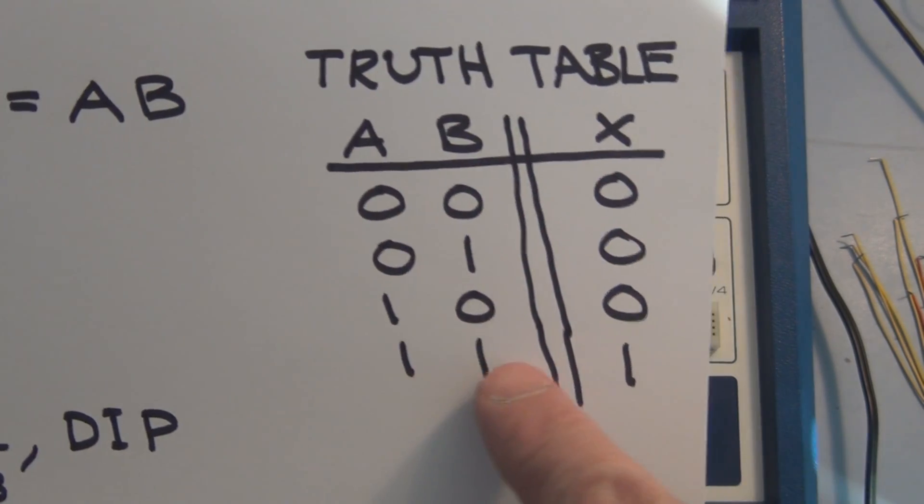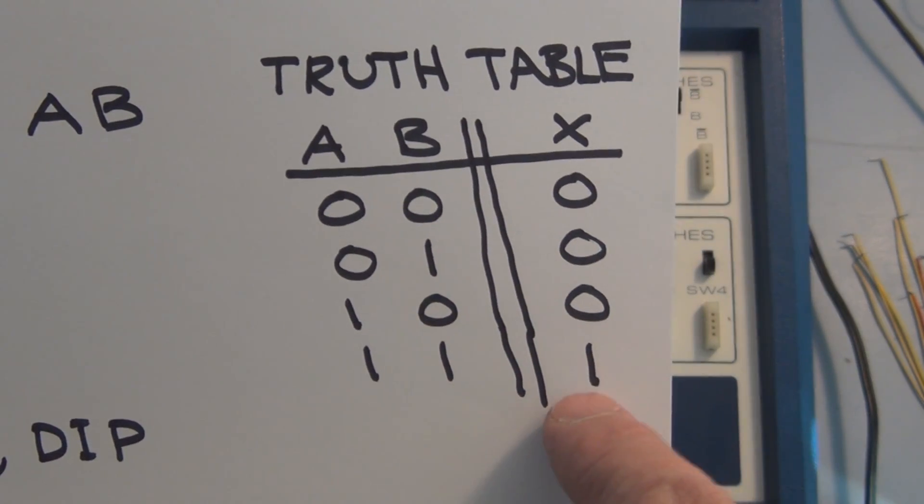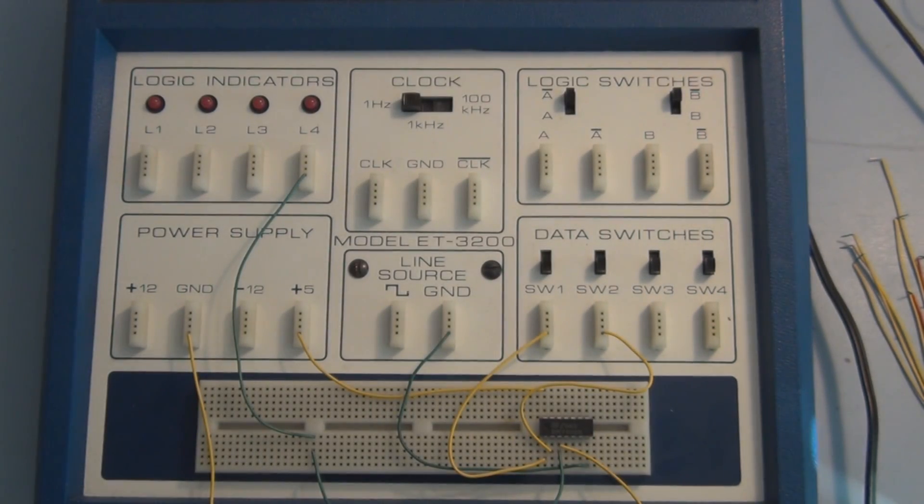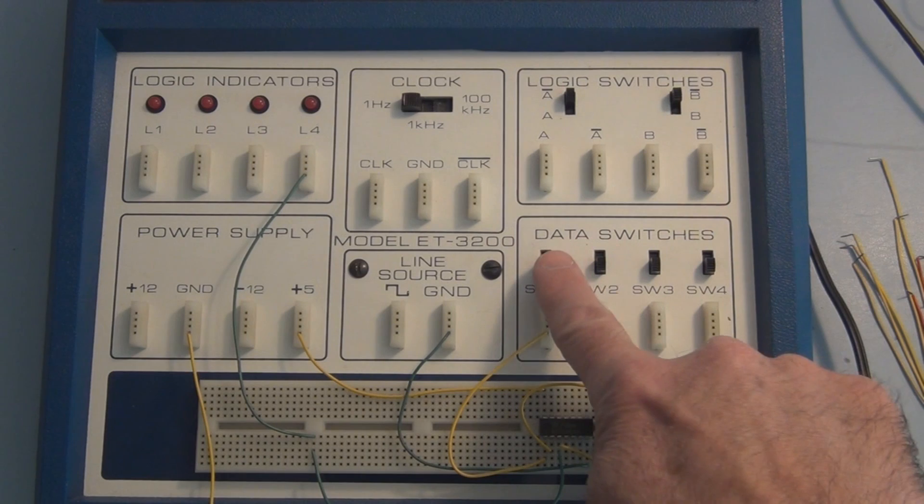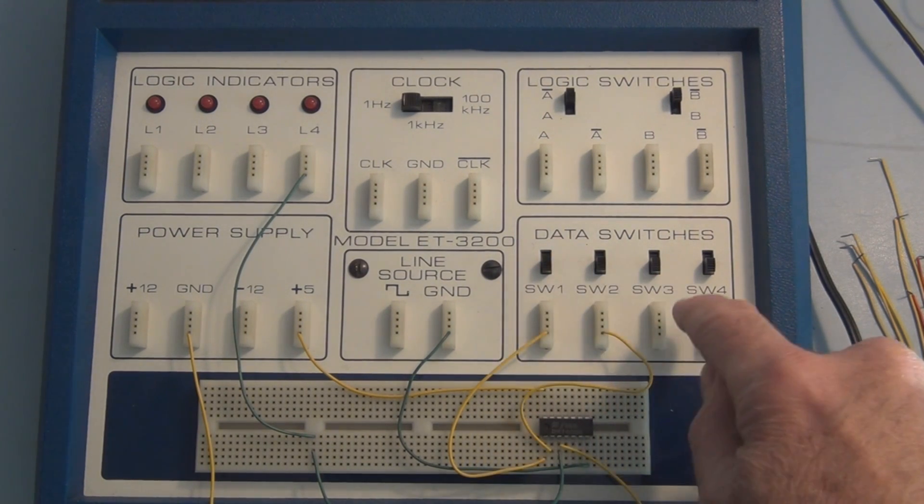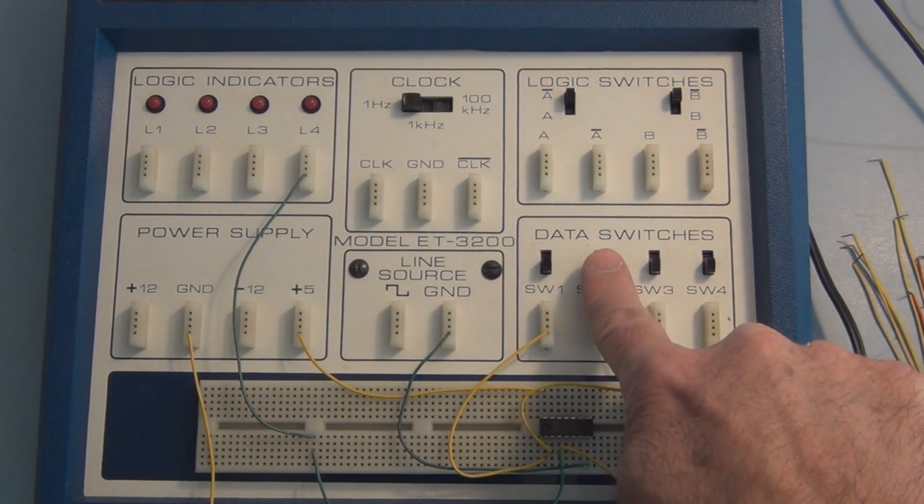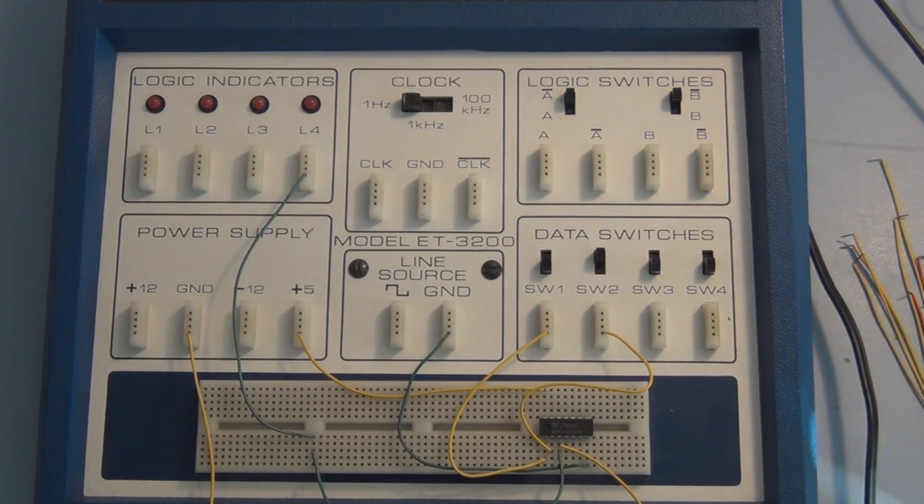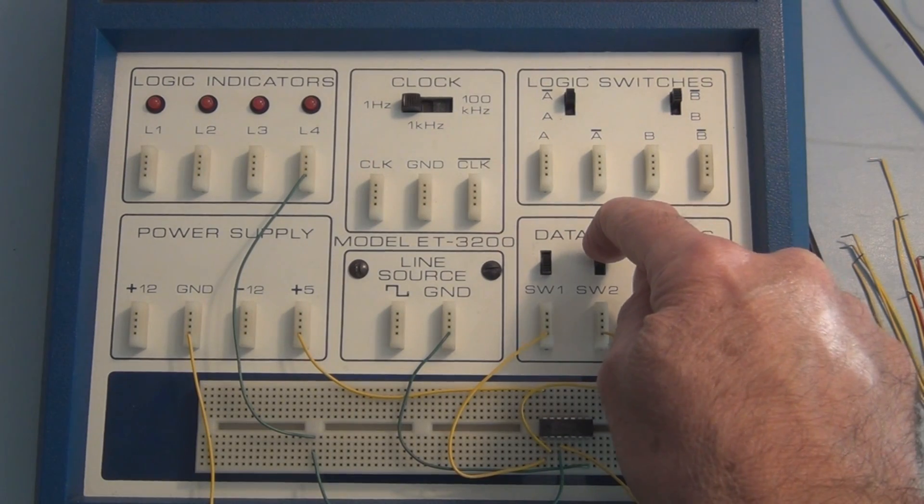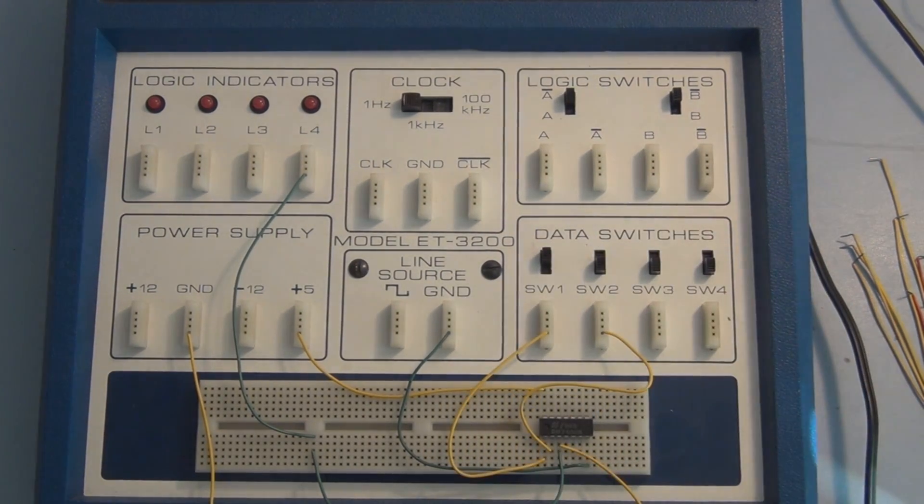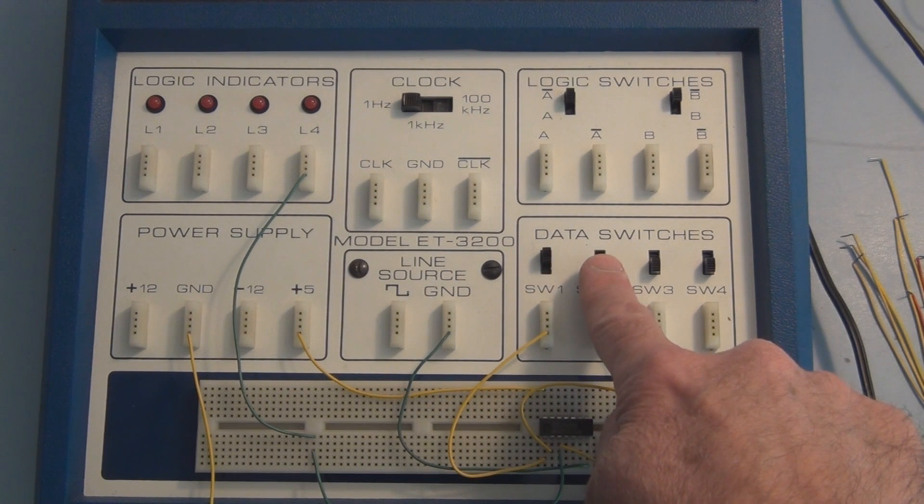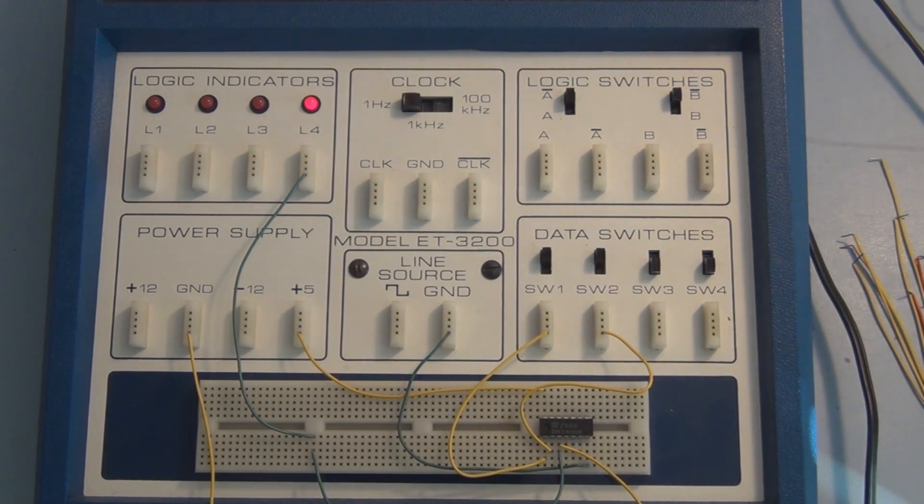So let's go through these combinations to see if we get a one only when both inputs are high. Right now it's zero, zero. Now we're going to apply a zero and a one, then we will reverse that as a one and a zero. The next combination is a one and a one, and the LED should light, and there it is.